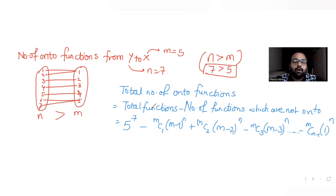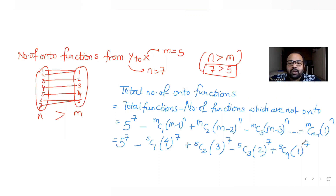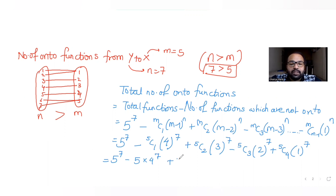Substituting m = 5, n = 7: 5^7 − 5C1·4^7 + 5C2·3^7 − 5C3·2^7 + 5C4·1^7. This simplifies to 5^7 − 5·4^7 + 10·3^7 − 10·2^7 + 5·1^7. We can factor out 5 to get: 5 × (5^6 − 4^7 + 2·3^7 − 2·2^7 + 1).